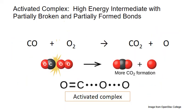An activated complex is a high energy intermediate state where reactants and products exist with partially broken and partially formed bonds. It's very unstable and it doesn't last long, but it's the intermediate that must form during the transition from reactants to products.